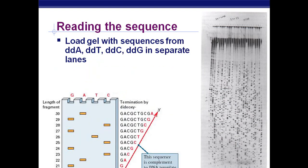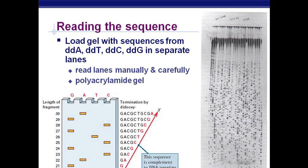You load the gel with the sequences gotten from your ddA, T, C, and G — all in separate lanes. Then you read the lanes manually and carefully in a polyacrylamide gel. This sequence is really a complement to the DNA template, so we can surmise what the other strand would have been. I really encourage you to look this over in your book — they do a nice job of explaining it.